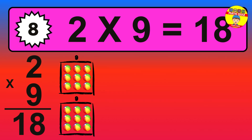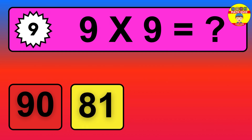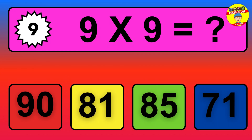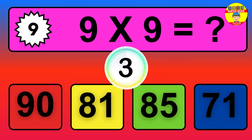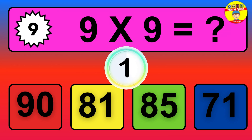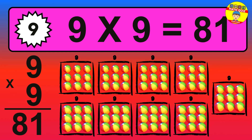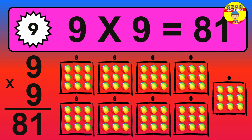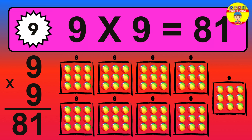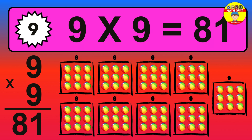Question nine: nine times nine equals what? The answer is nine times nine is eighty-one. To calculate, we have nine groups with nine balls each one. So how many balls do we have? Eighty-one balls.